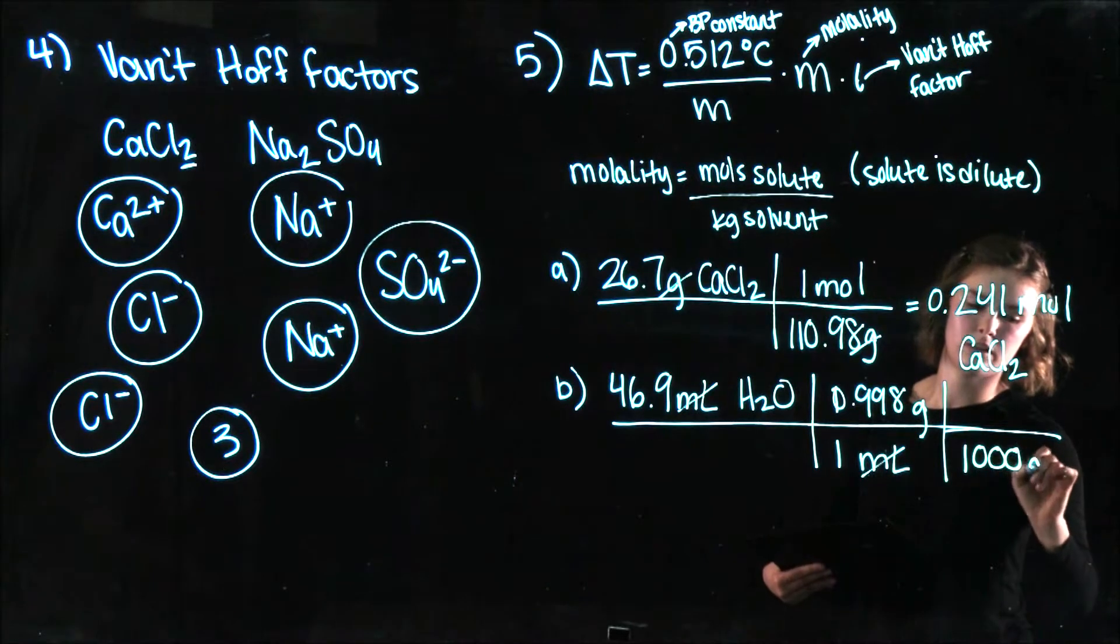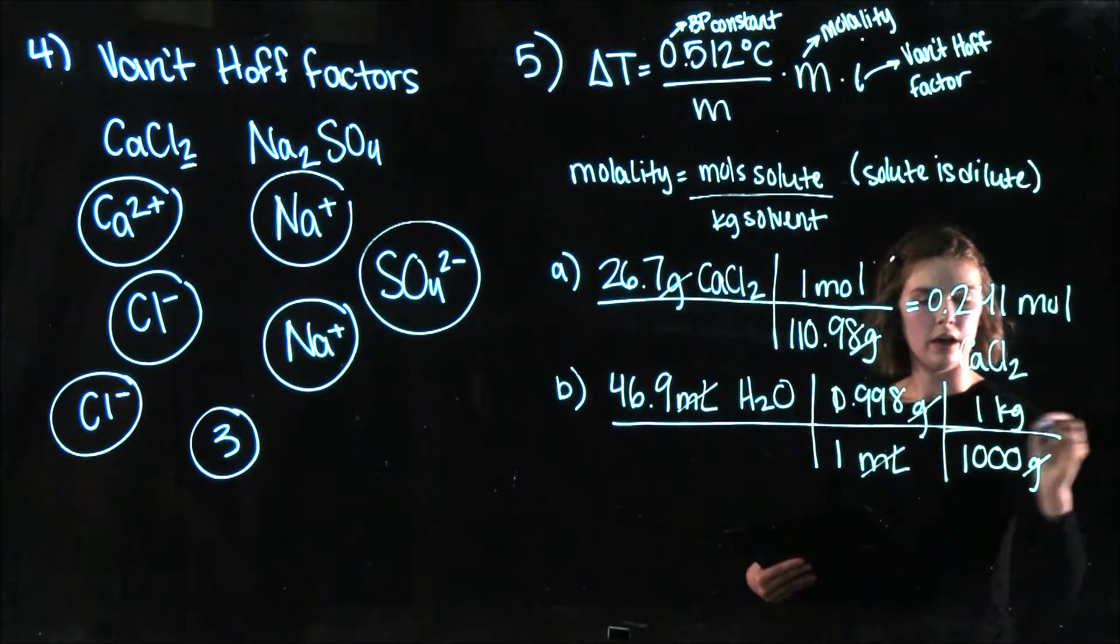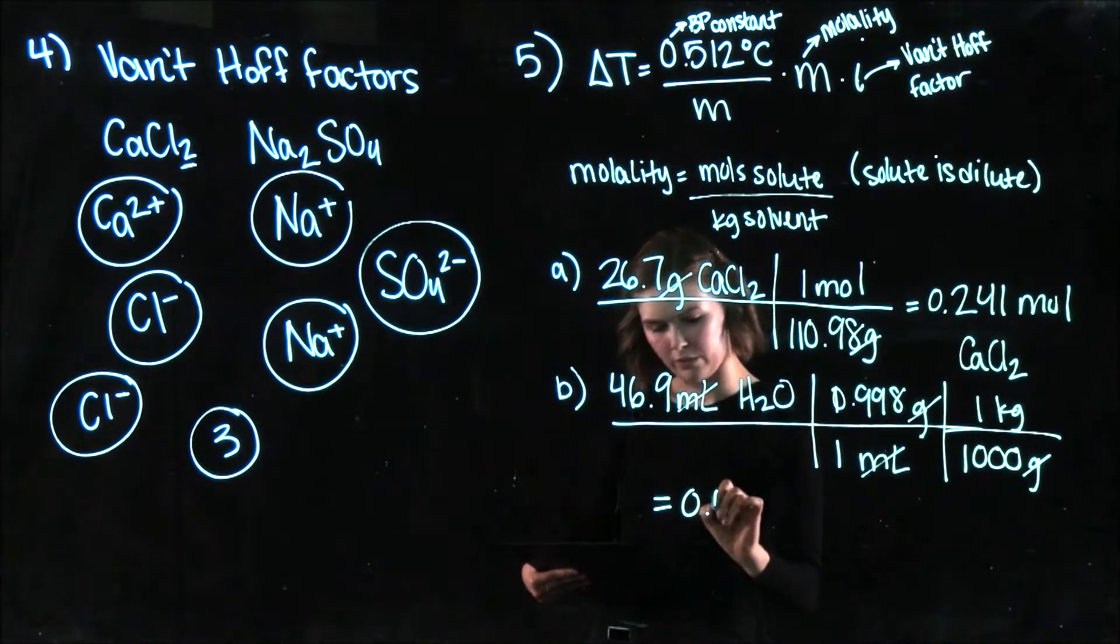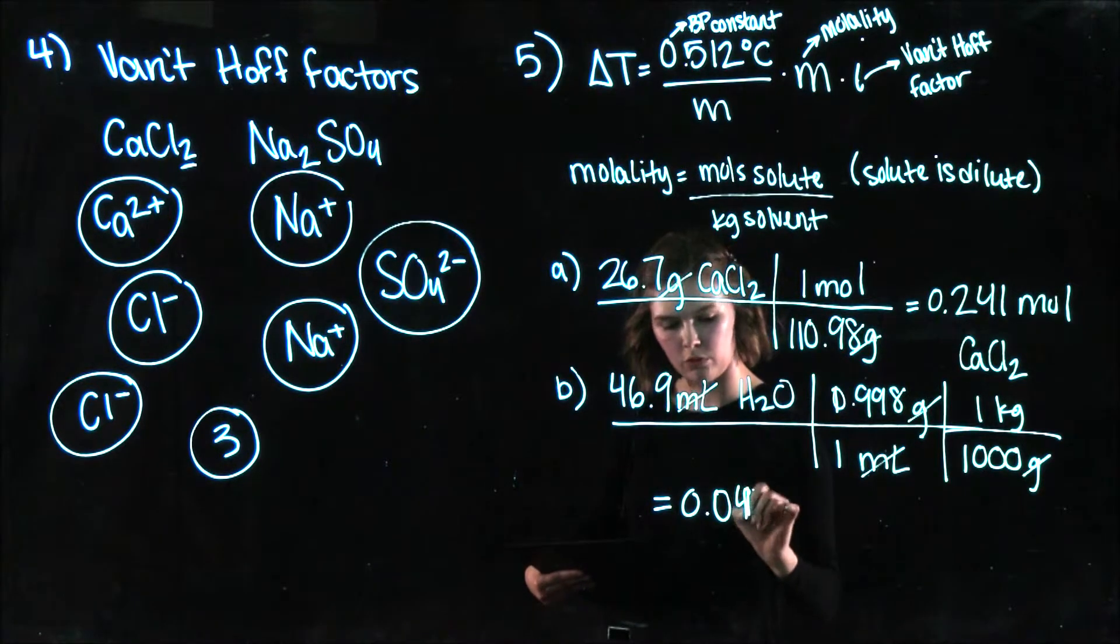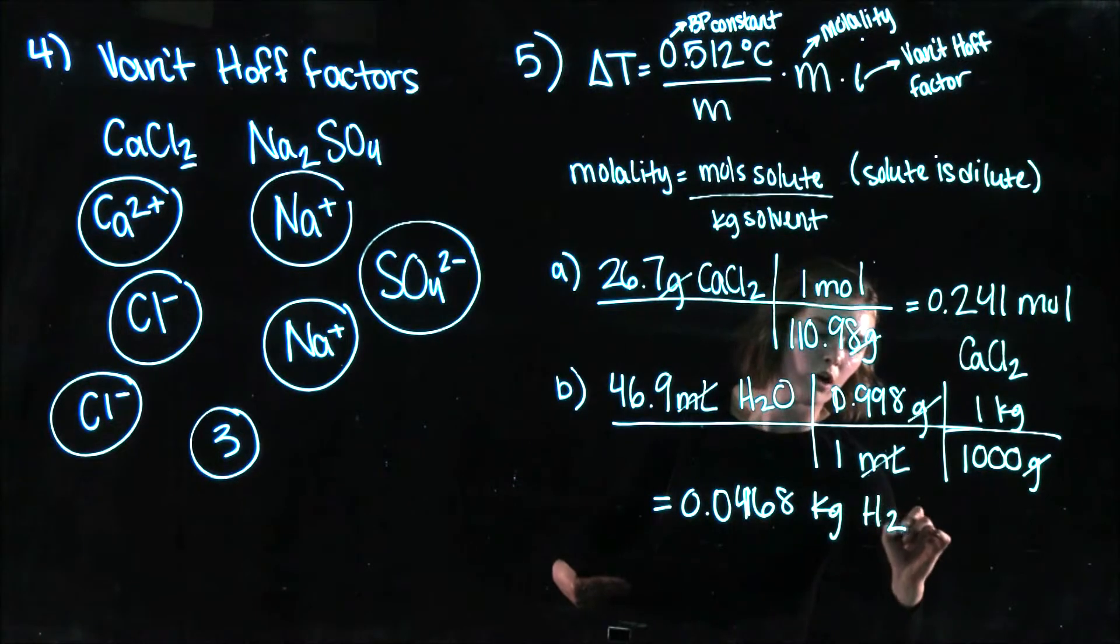So those cancel and then I'm going to convert to kilograms. So there's a thousand grams per kilogram. These cancel and I'm going to get 0.0468 kilograms of water.